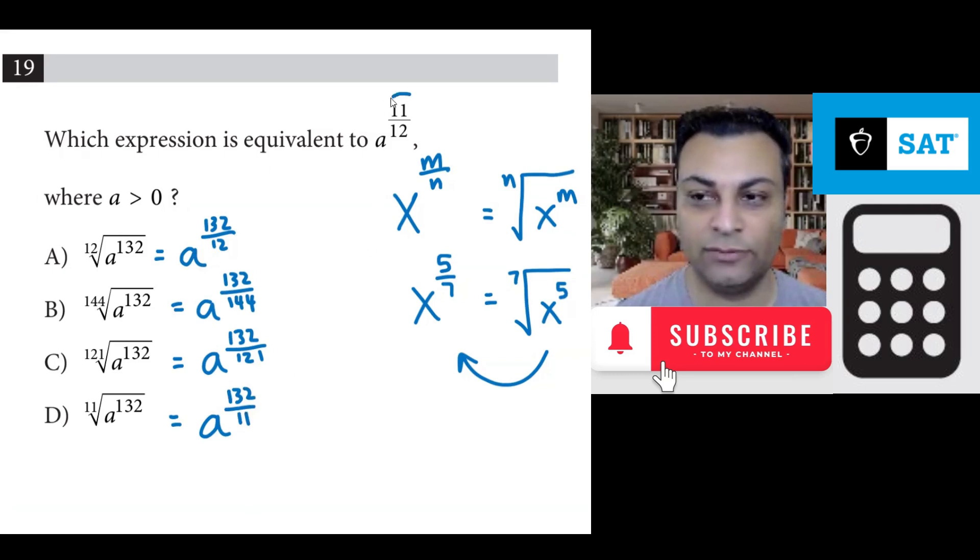And we're looking for a to the 11 over 12. So one of these fractions is equivalent to 11 over 12. The fastest way you can tell is that 11 is less than 12, so this fraction is below 1.